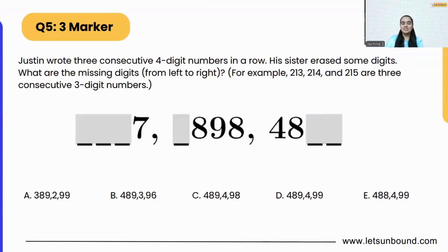It is going to be the fifth problem that came as a three marker in the recent Math Kangaroo exam. The problem is: Justin wrote three consecutive four-digit numbers in a row. His sister erased some of the digits.